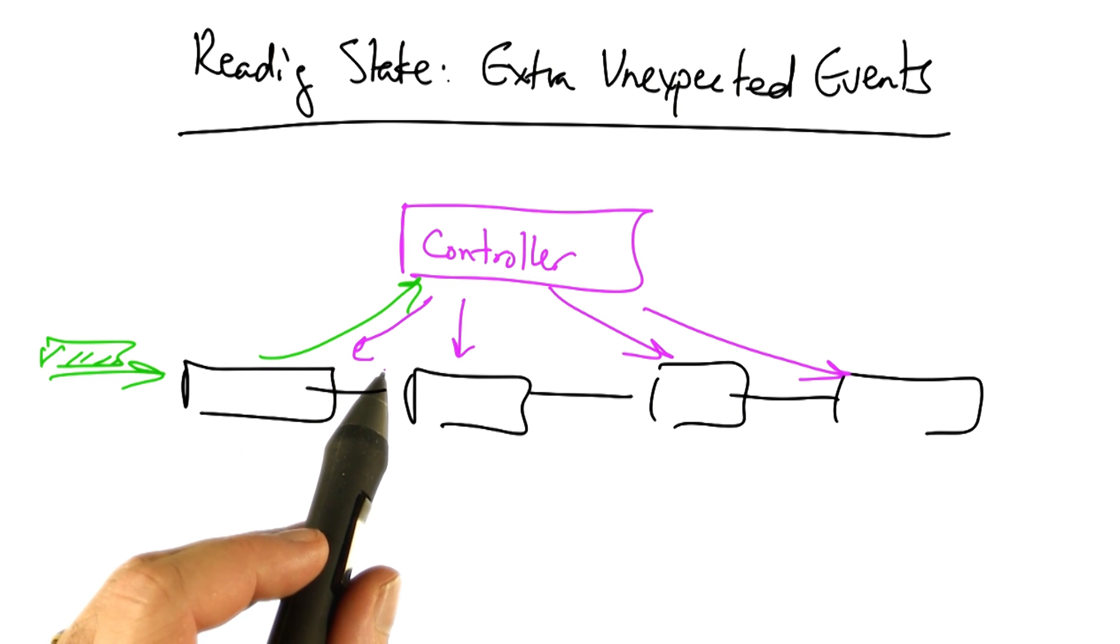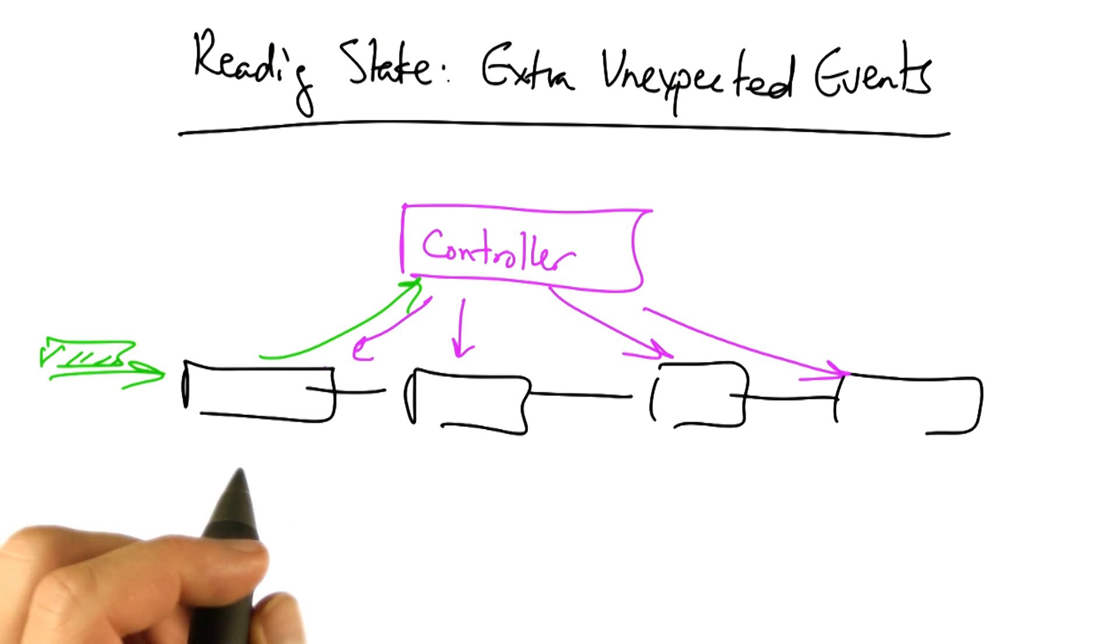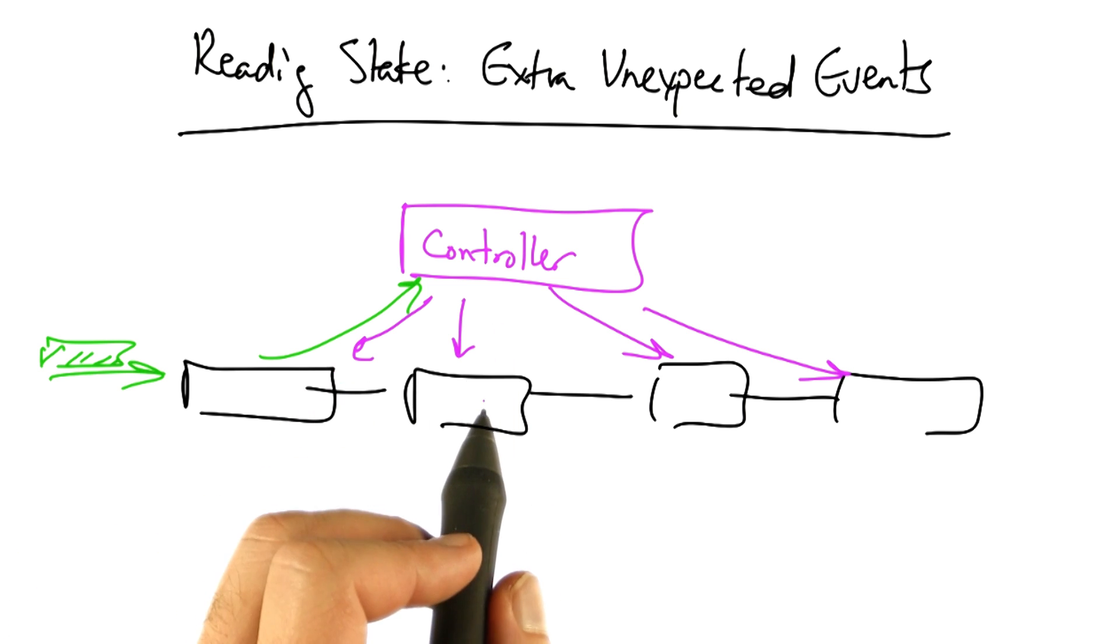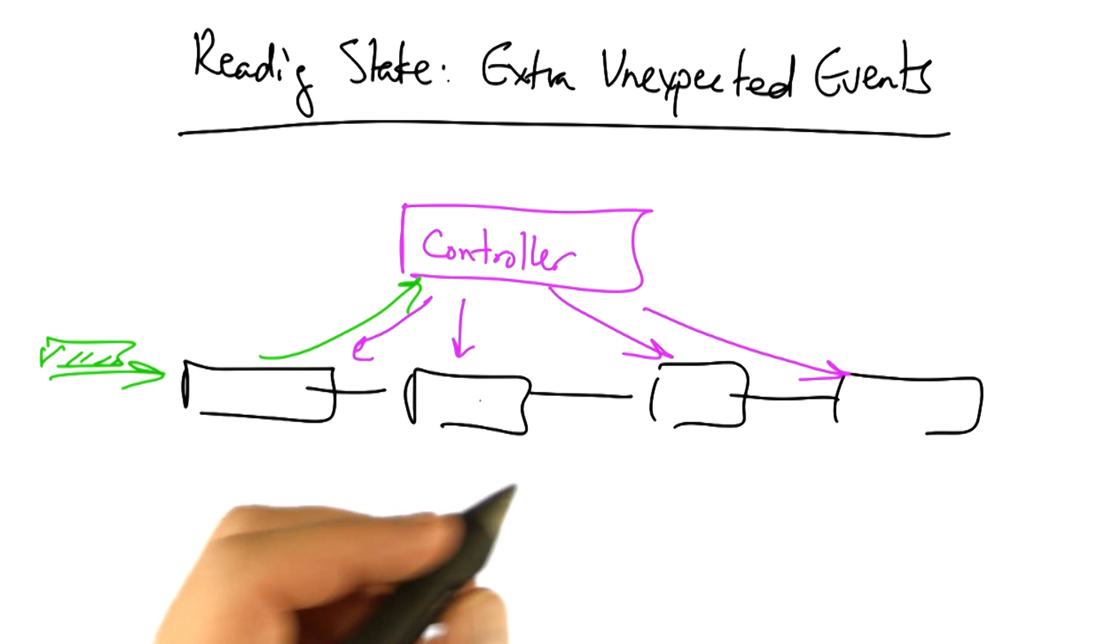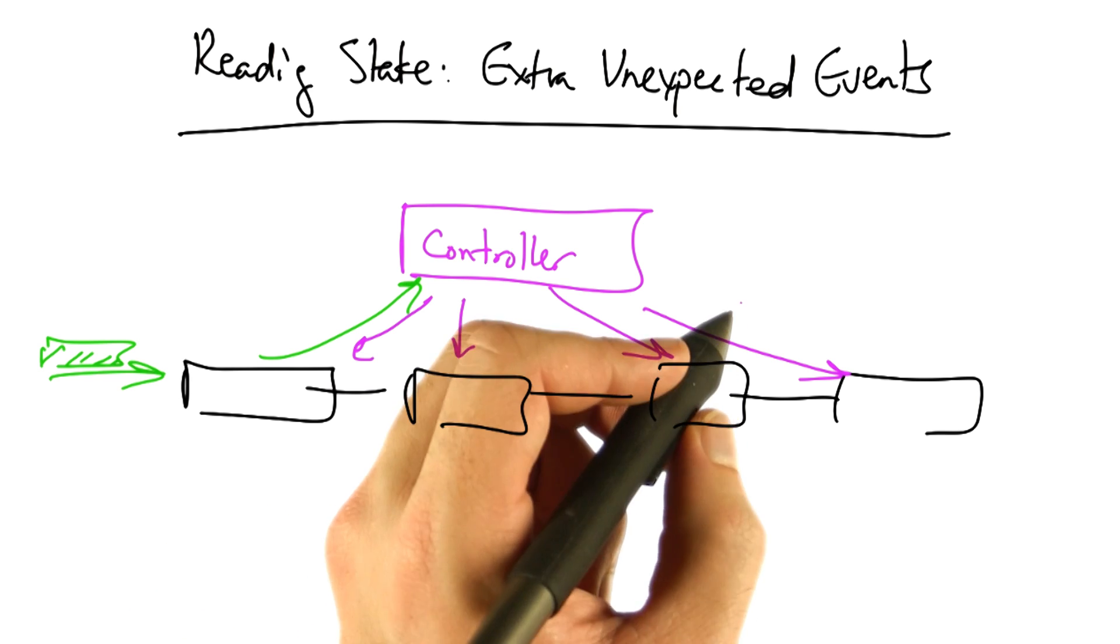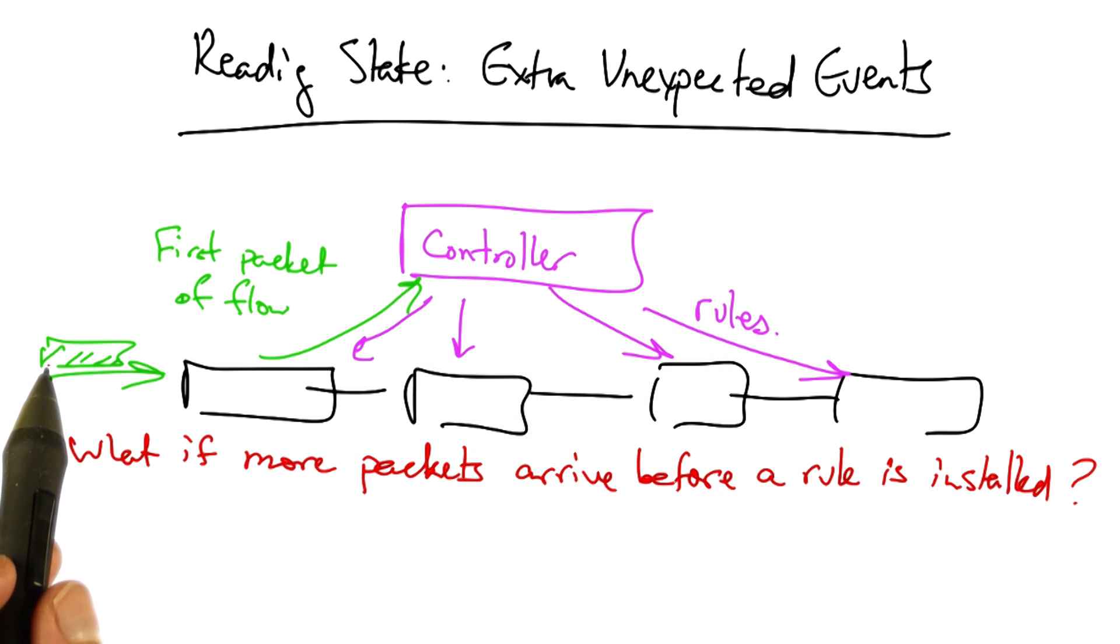Once the controller figures out what policy to apply for that flow, the controller then installs rules in the switches in the network corresponding to that flow. What if more packets should arrive at the switch before the controller has a chance to install rules for that flow?